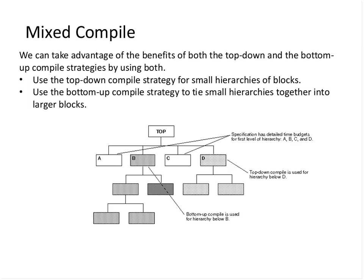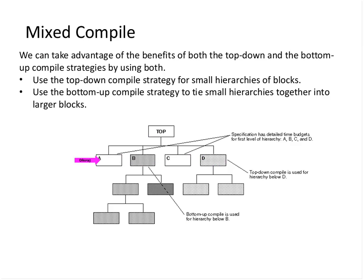Assuming the top level will have some glue logic. Similarly, you could also have a mix-level compile where we take the advantages of both top-down and bottom-up - use top-down for small blocks, use bottom-up to tie small hierarchies into larger blocks. For example, A, B, C, and D could all be bottom-up compiled - each compiled separately with timing budgets defined - and then at the top level we read in the netlists for A, B, C, and D. So if you look from the top it is bottom-up, if you look from the A or B level it is top-down. But for your blocks, the recommendation is to use top-down.